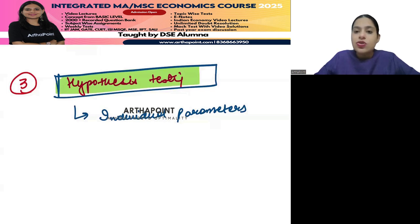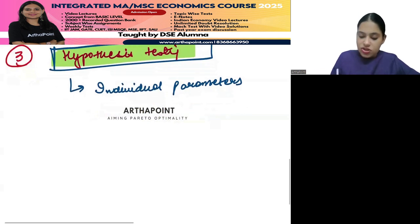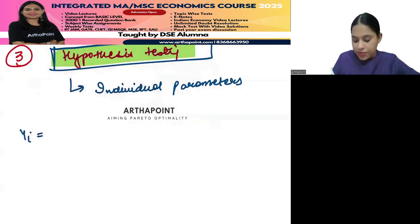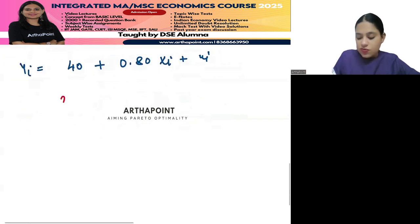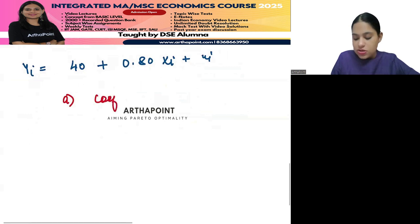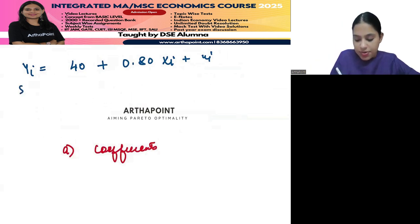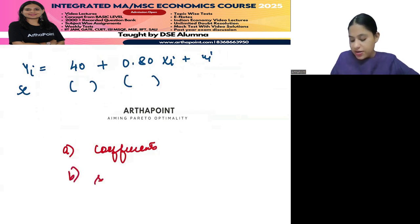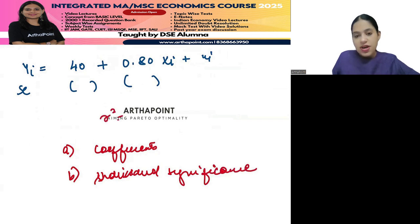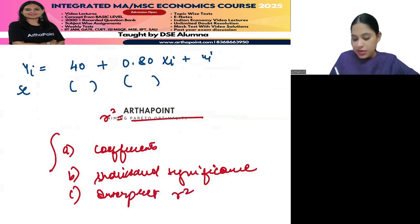It will be a fixed question - this is the exact paper that will come in the exam. They will give you a regression model like Yi = 40 + 0.80Xi + ui and first ask you to give the meaning of these coefficients. Then they will give you standard errors and ask you to find individual significance.